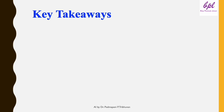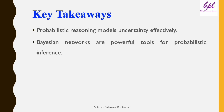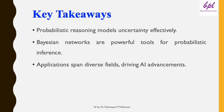To wrap up, here are the key takeaways. Probabilistic reasoning is crucial for AI to deal with uncertainty. Bayes' theorem helps AI update its beliefs with new evidence. Bayesian networks are powerful tools for modeling and reasoning. And probabilistic reasoning drives AI in fields like medicine, robotics, and recommendation systems.